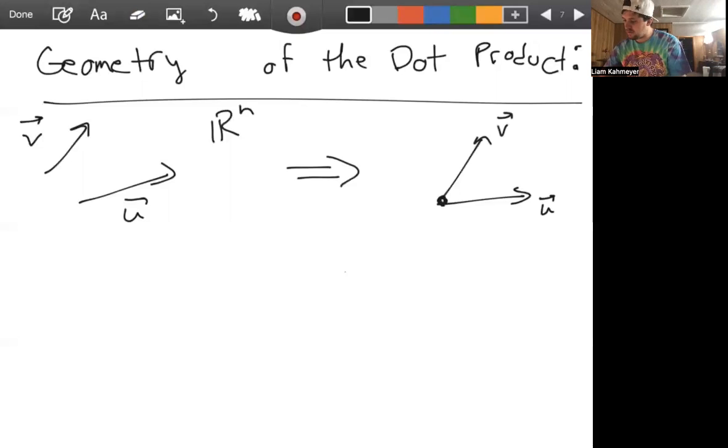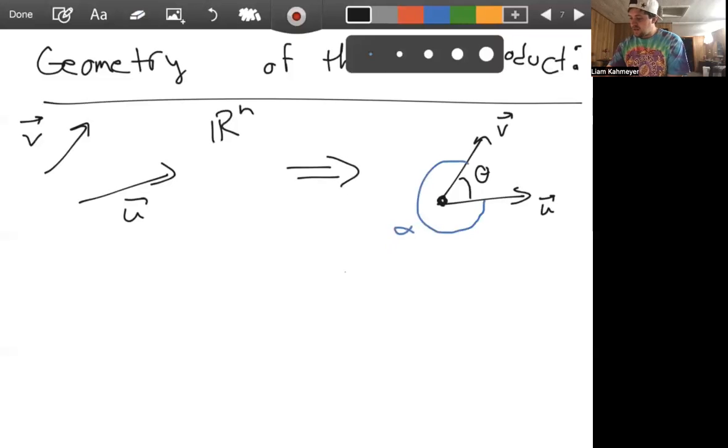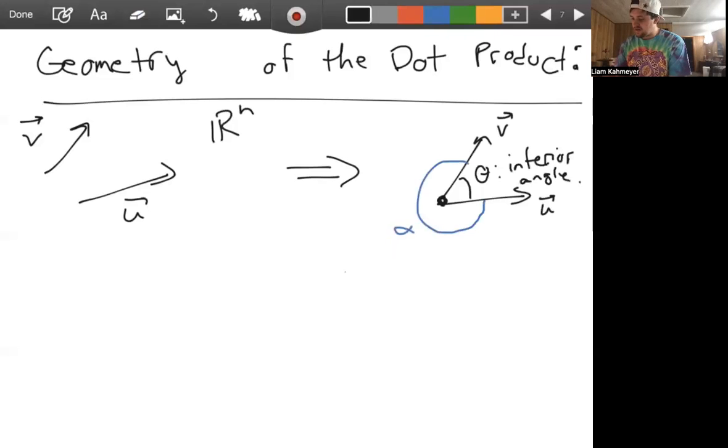And there are two angles. Now, if you look at a plane like a two-dimensional slice of your n-dimensional space, there are angles formed from putting these vectors together. There's theta here and there's this other angle, maybe we can call it alpha.